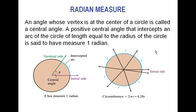A radian measure is just another way of relating angles to the arc of a circle — two ways of measuring the same thing. We're still measuring an angle. It really is no different than talking about something in inches versus centimeters. Those are two different measurements for a linear length; radians and degrees are two different measurements for an angular length.